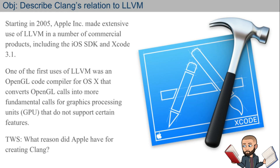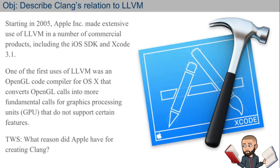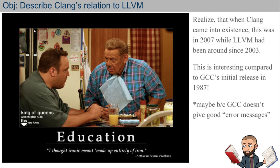LLVM plays nice with the GPU. Clang came into existence around 2007, but LLVM had been around since 2003. Since we're talking about age, GCC had been around since 1987 — so GCC is definitely the grandpa here. Clang/LLVM are the new guys on the block.